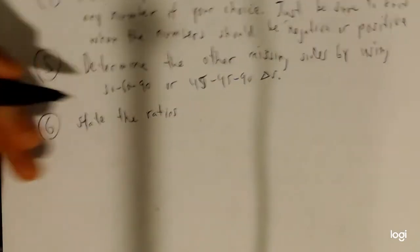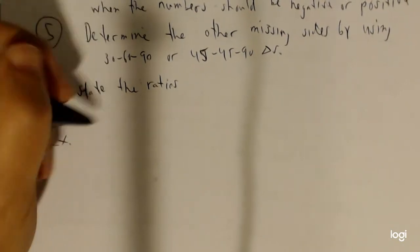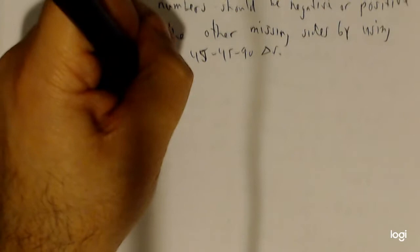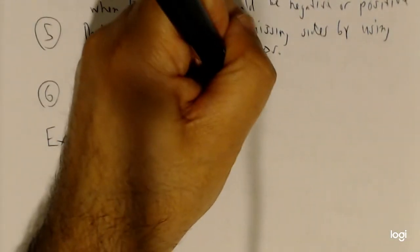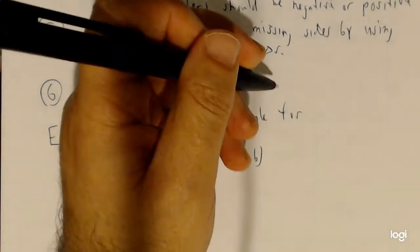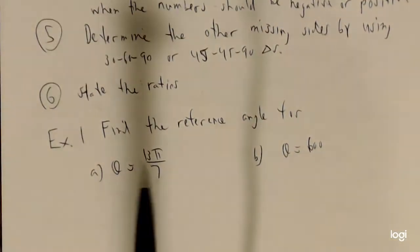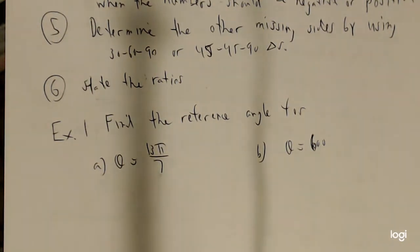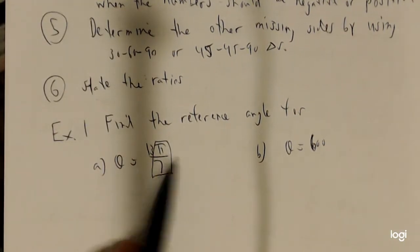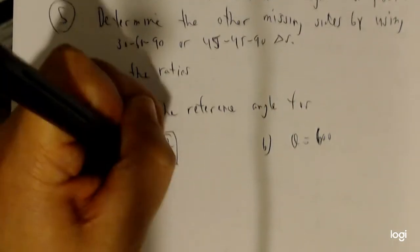Now let's look at examples. First, let's find reference angles. Part a: 13π over 7. When working in radian measure, identifying reference angles is straightforward. As long as 13/7 is completely simplified — which it is — the reference number is simply π over the denominator: π over 7.